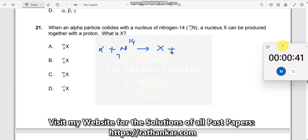Nucleus X is being produced with a proton, 1H1. What is X over here?